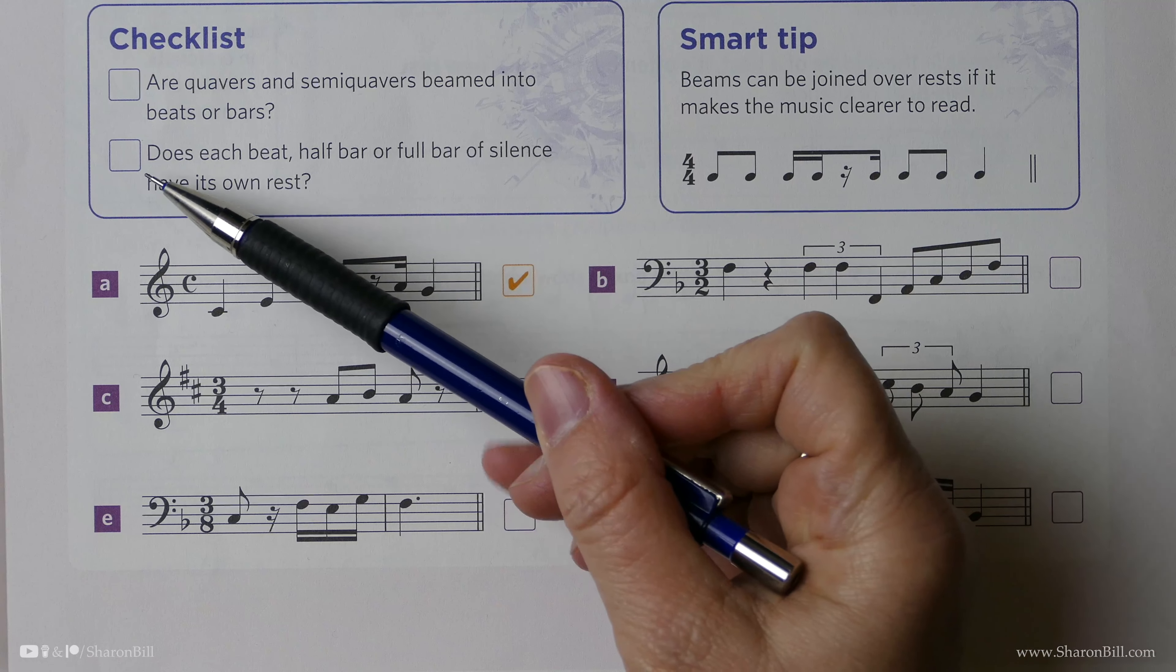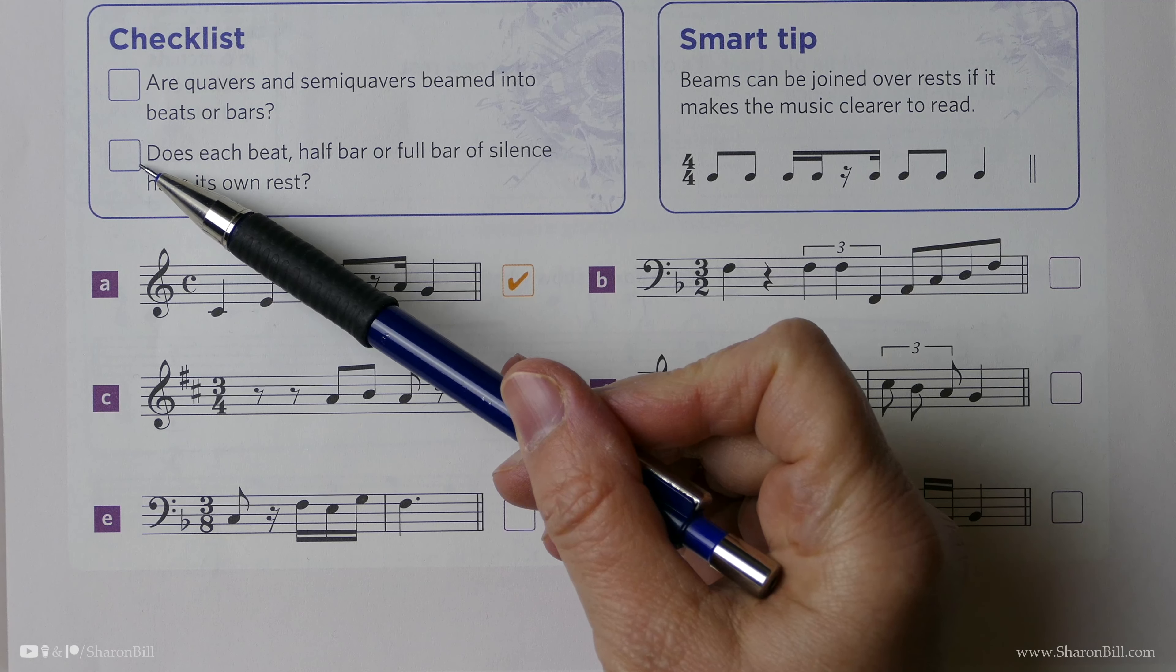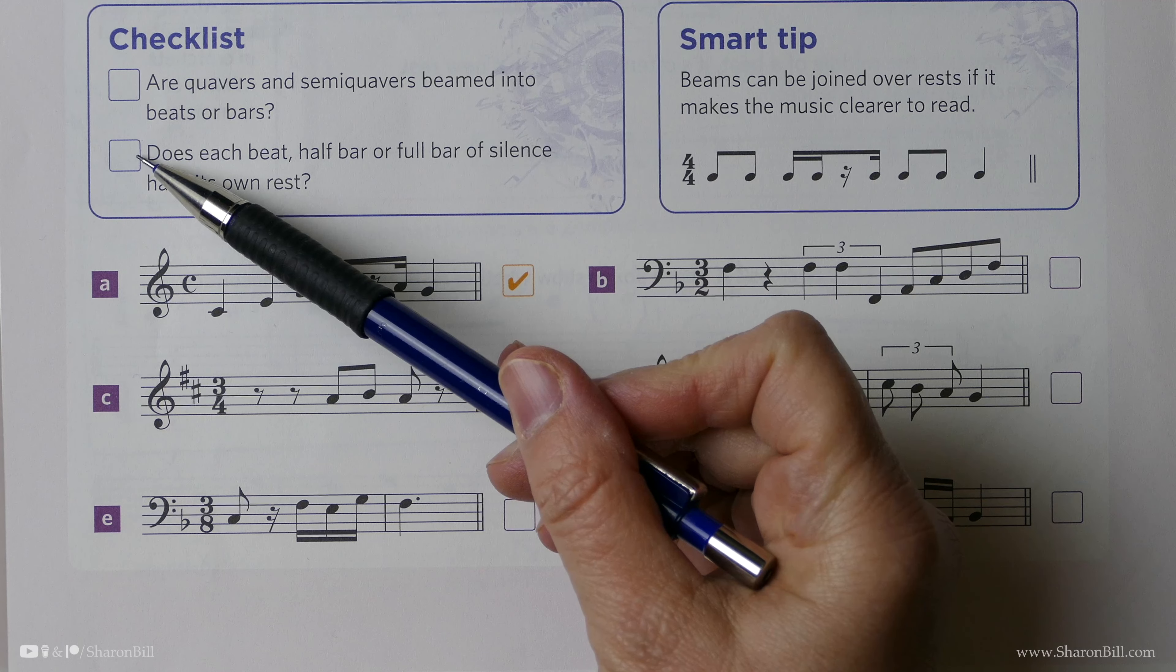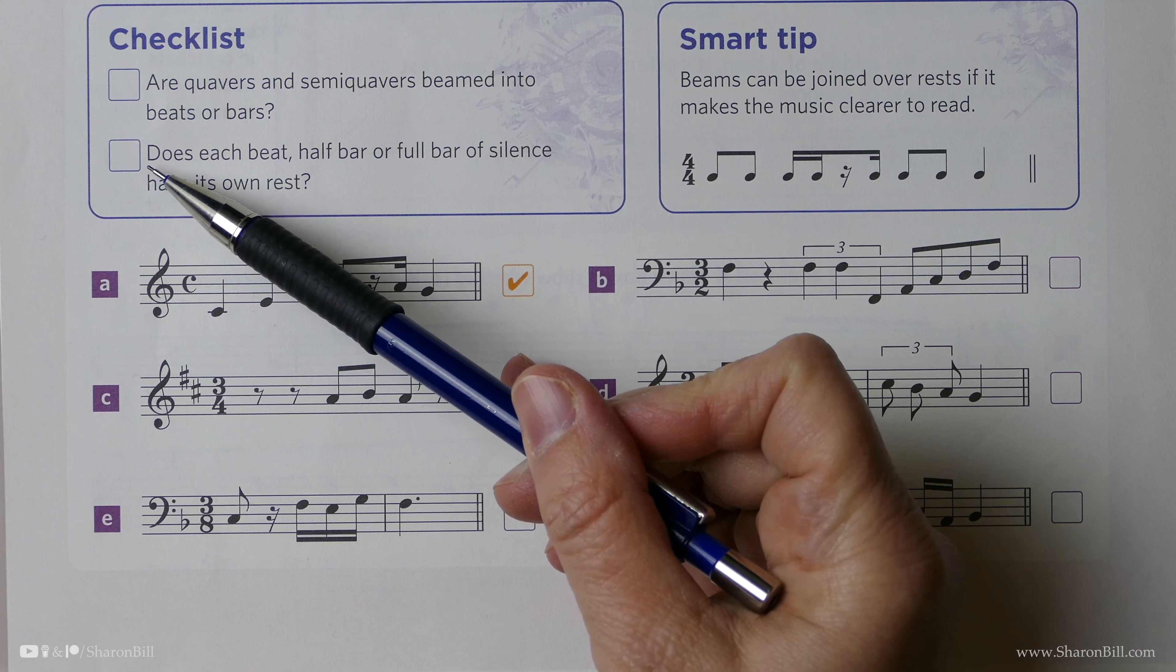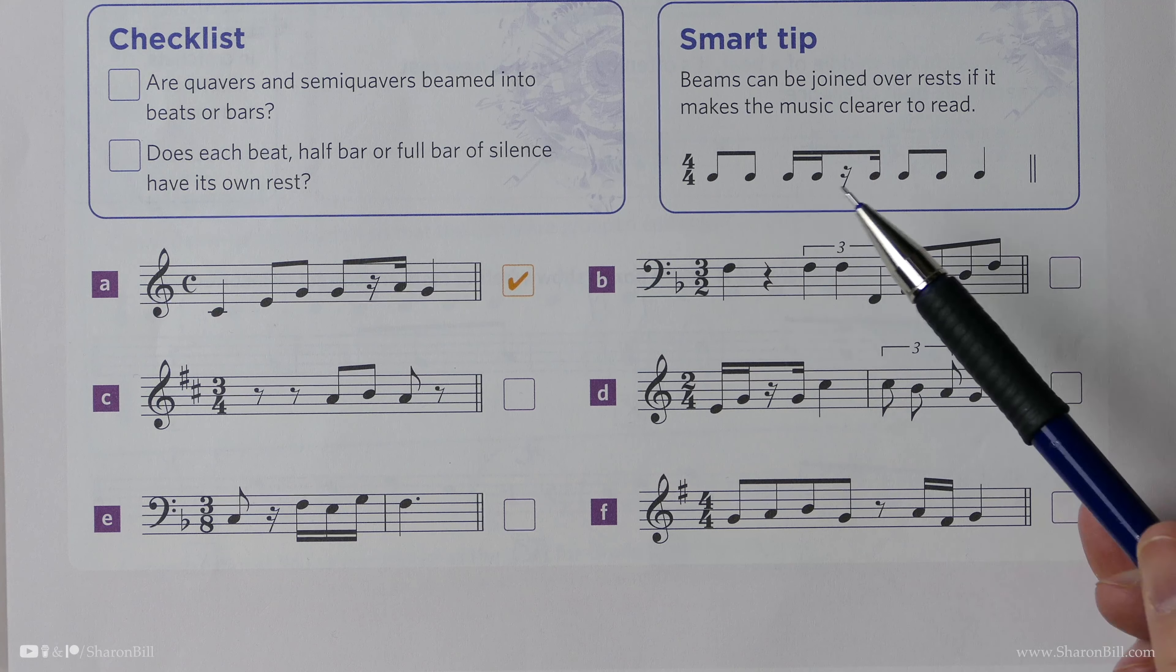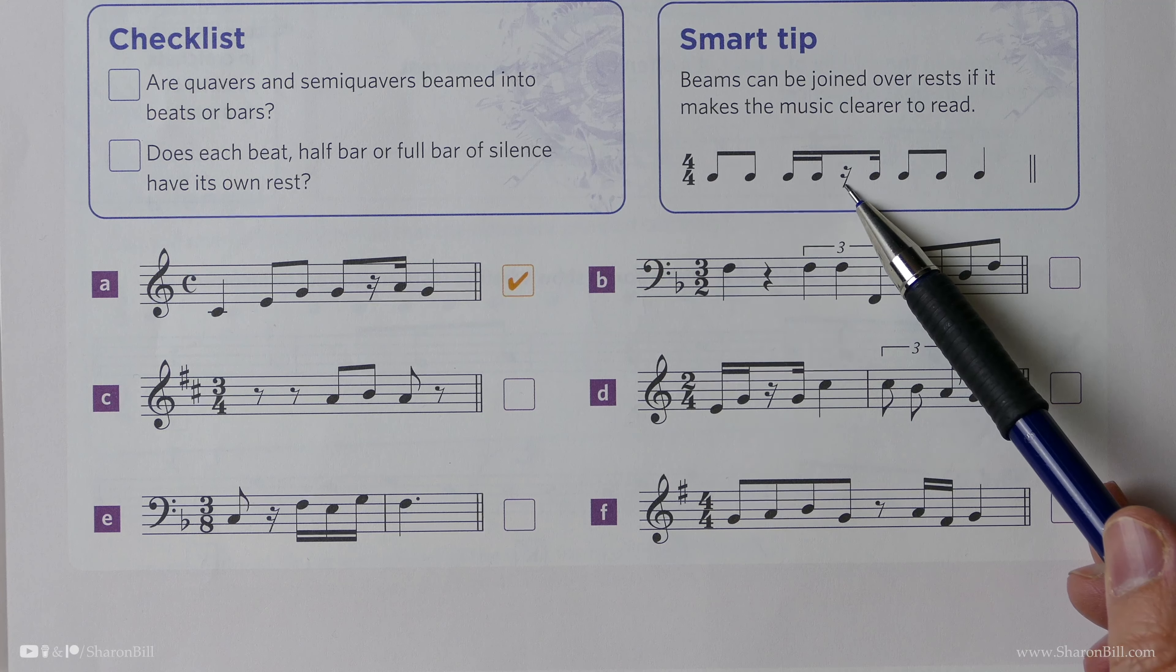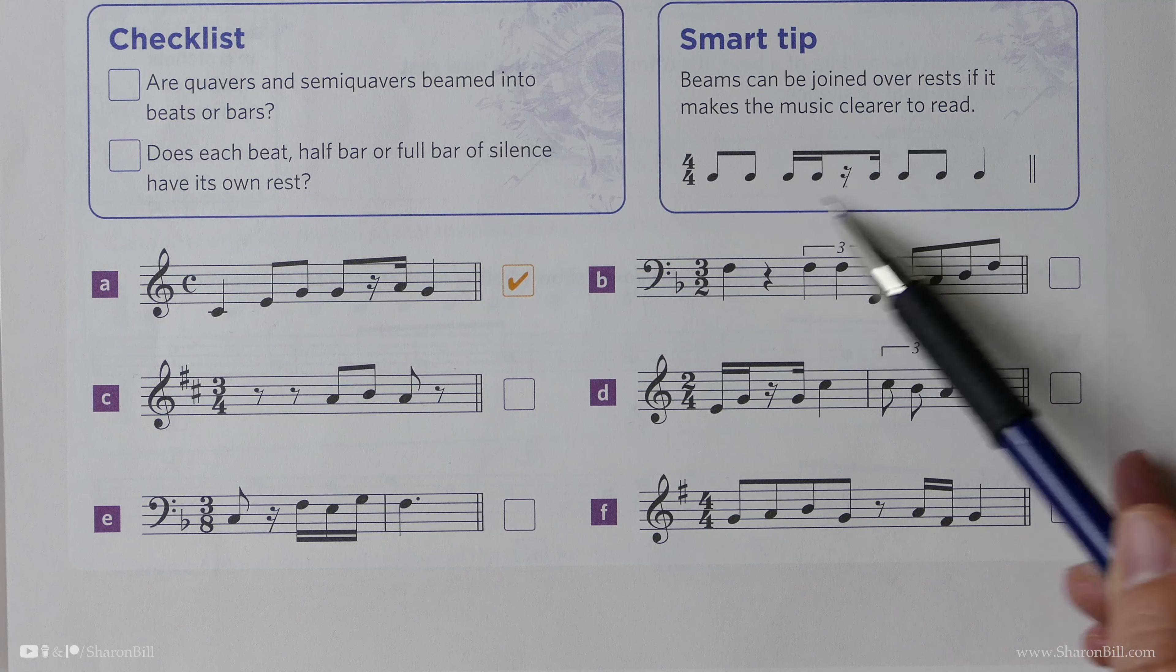Are we observing the exceptions to that rule, where we can show each half of a bar or a full bar's rest or silence or beaming in minimum beats' worth? And don't forget that we can beam over a rest as well to clearly show where each group falls.